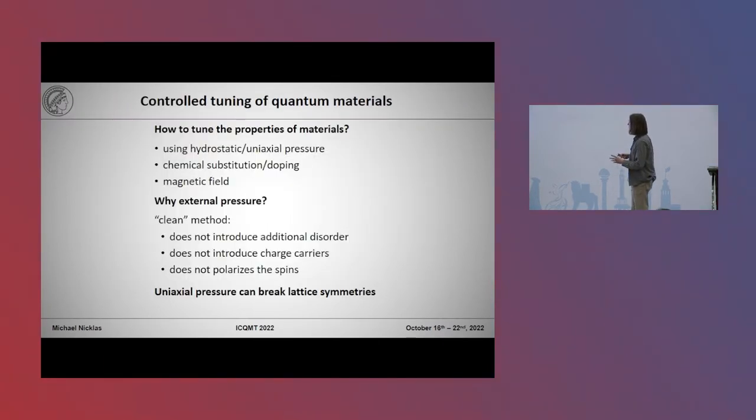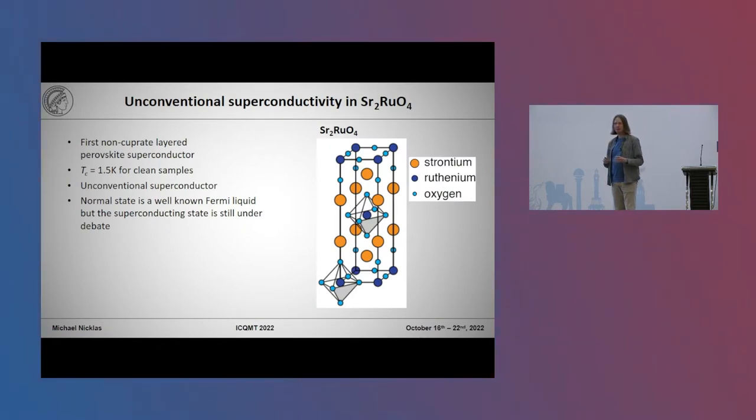So what are we doing? We are using hydrostatic or uniaxial pressure to tune quantum materials because in that way we can do a clean tuning without introducing additional disorder by substitution or doping, or we are also not polarizing the material by using the magnetic field as tuning parameter. And in particular, uniaxial pressure can also break lattice symmetries. For example, when we have a tetragonal system like in the case of strontium ruthenate, when we apply uniaxial strain along one of the axes in the plane, we break the symmetry and go from tetragonal to orthorhombic material.